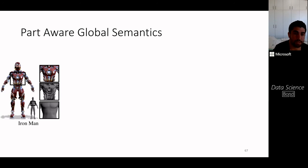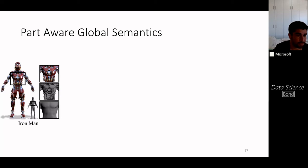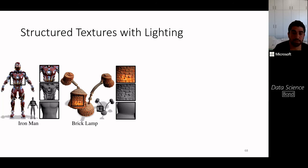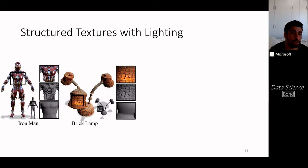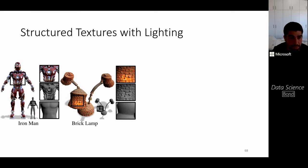Our 3D manipulation should be aware of global semantics. For example, stylizing Iron Man, we consider muscles, clothing, material, and different textures. In another example with a brick lamp, there is a global understanding that light also exists within the brick lamp, and the texture of the brick is correctly identified. The method needs to understand these global semantic properties when stylizing.